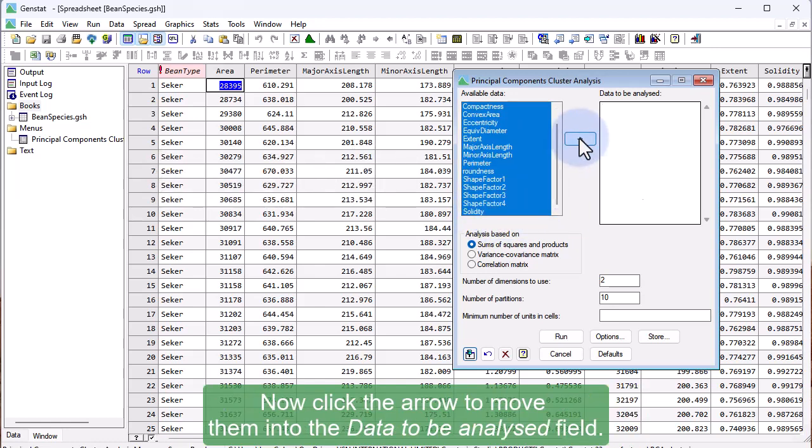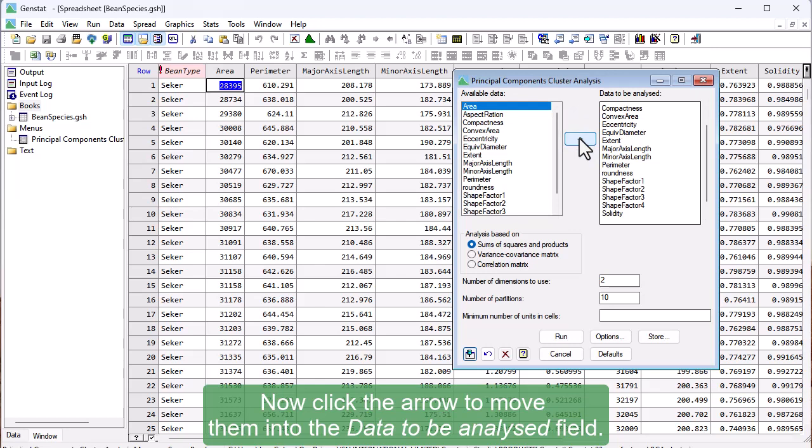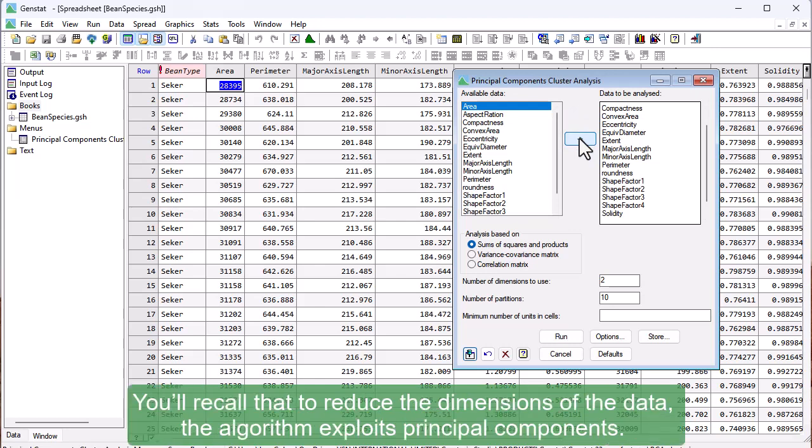Now click the arrow to move them into the data to be analysed field. You'll recall that to reduce the dimensions of the data, the algorithm exploits Principal Components.